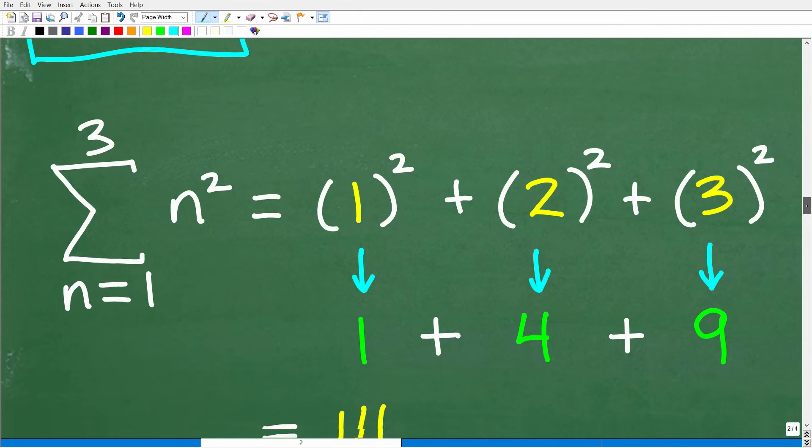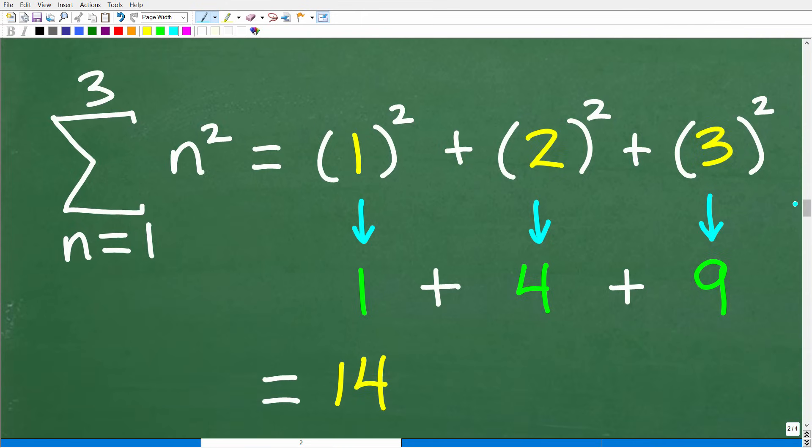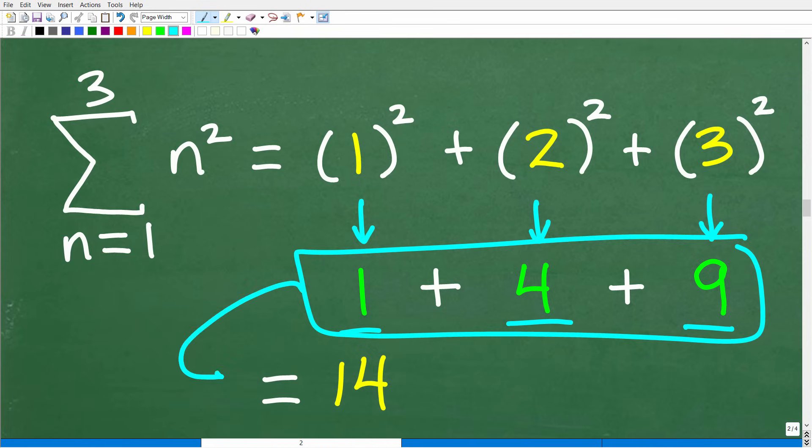So now we're just talking about basic math. So one squared is one times one, which of course is one. Two squared is two times two. That's four. Three squared is three times three. That's nine. One plus four plus nine is 14.